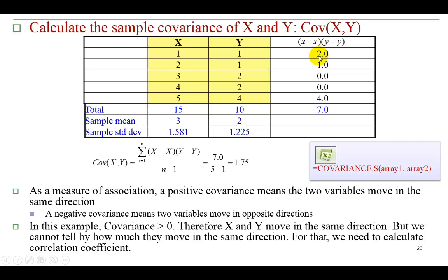In the same way, you do the same for the other values. Then we're going to sum them, and that's 7. Then we're going to divide by degrees of freedom, which since we use sample, we're going to have to divide by the sample size minus 1. So we have a sample size of 5, 5 pairs of observations. So 5 minus 1 is 4 divided into 7 will give us 1.75. This tells us that the two variables x and y move in the same direction. By how much, we really don't know. We'll get to that shortly.